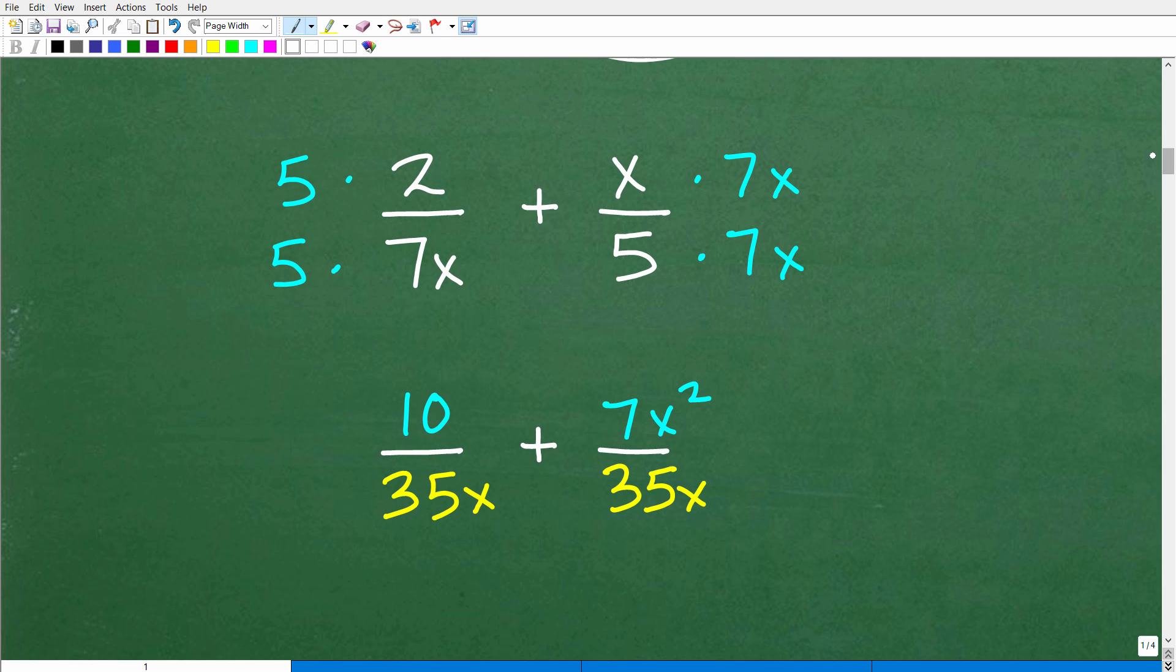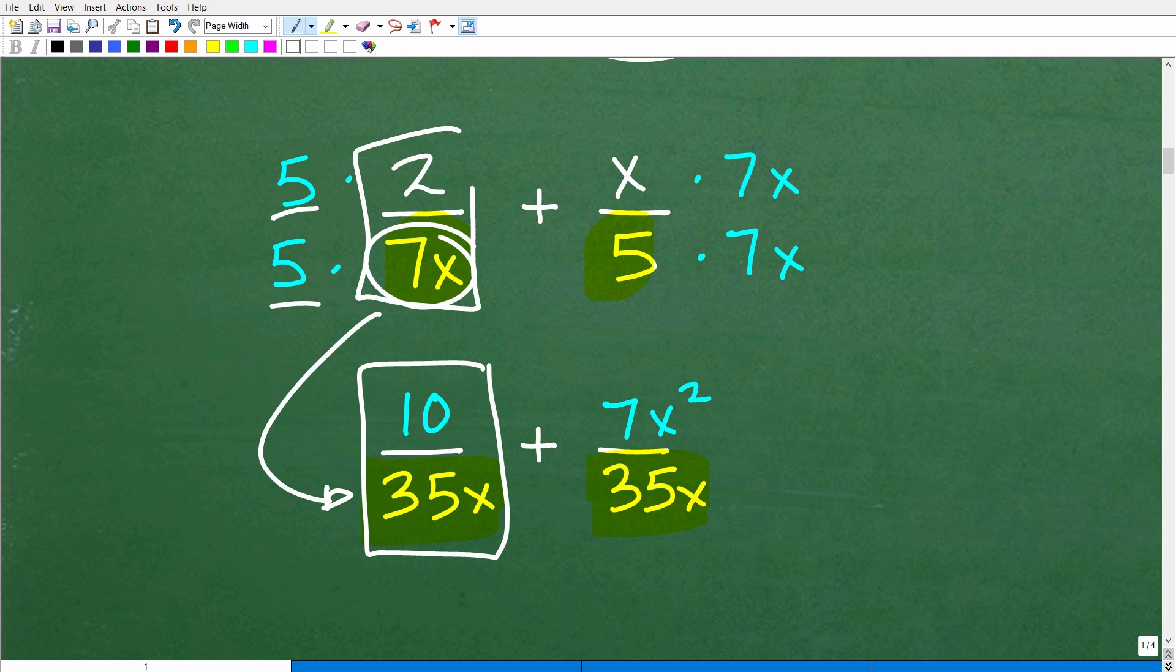Okay, so now let's go ahead and take this to the next step. So we're going to have to rewrite our problem here. We have 2 over 7x plus x over 5. We're going to have to change these denominators to a 35x. So how do I change a 7x, for example, into a 35x? Easy, just multiply that 7x by a 5, and we get a 35x. But if you multiply the denominator by 5, you're going to have to also multiply the numerator by 5. So 5 times 2 is 10. And so 2 over 7x is equivalent to this new fraction, 10 over 35x. Okay, so these are the same. We just have a different denominator, okay?